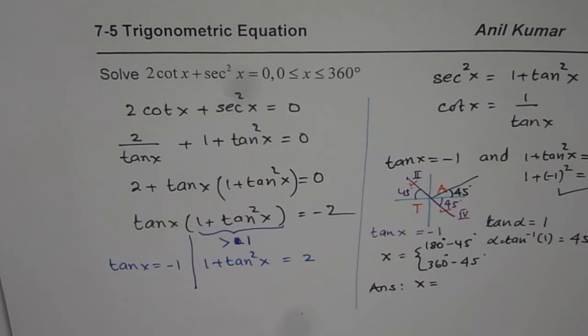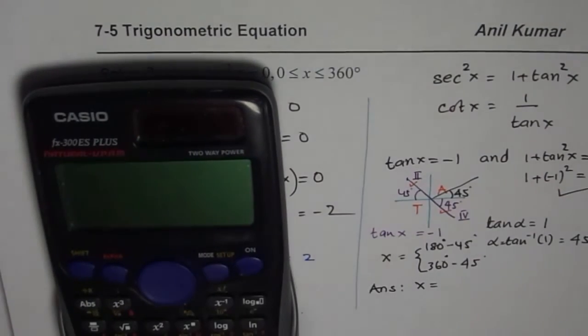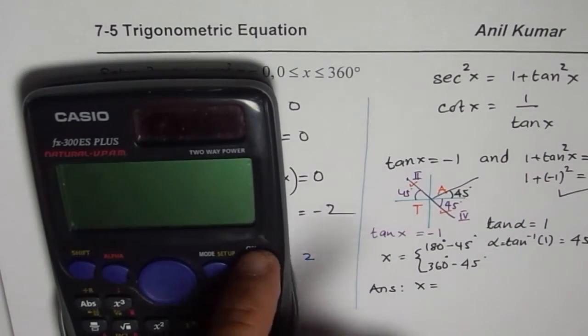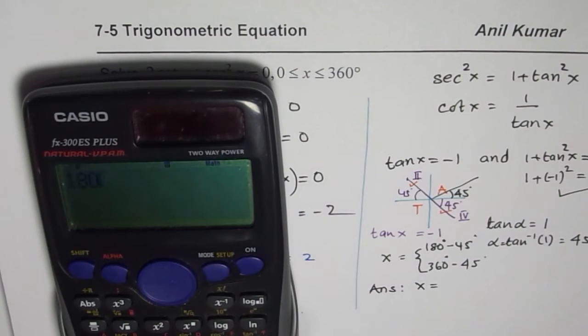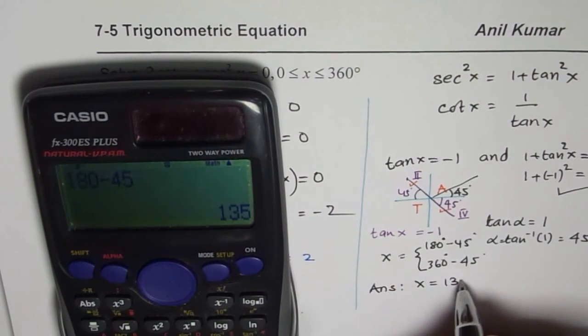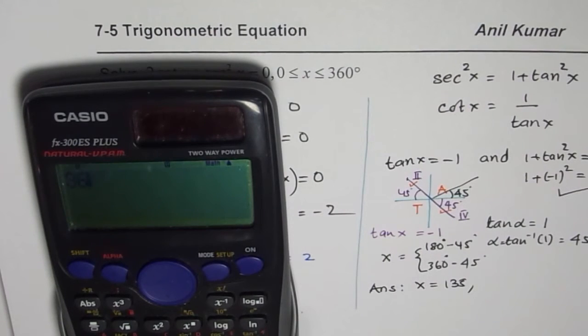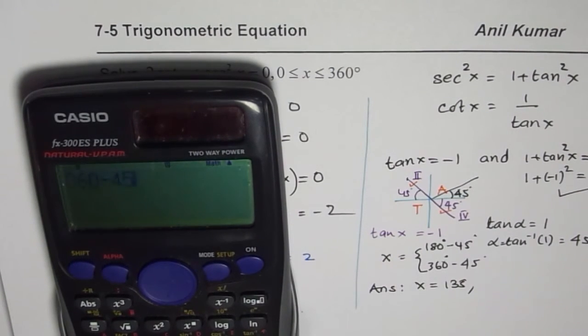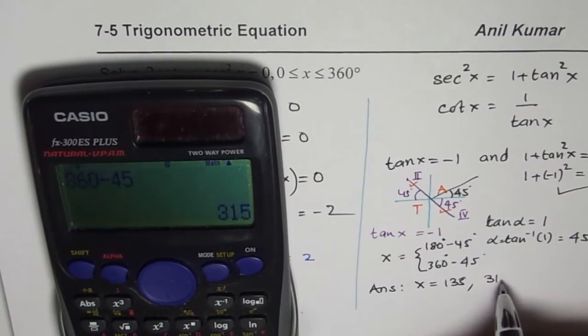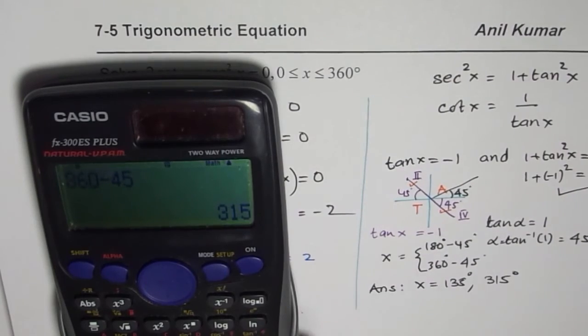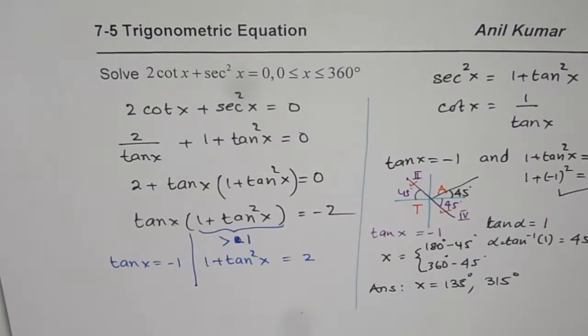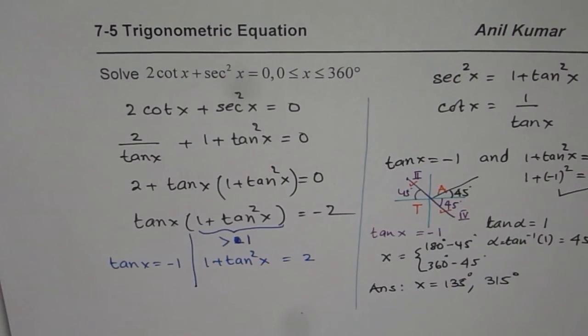As x is equal to, you can use calculator. So we have 180 minus 45 equals to 135 and 360 minus 45 equals to 315 degrees. So these are the two solutions for the given equation in the domain 0 to 360 degrees. I hope that helps. Thank you.